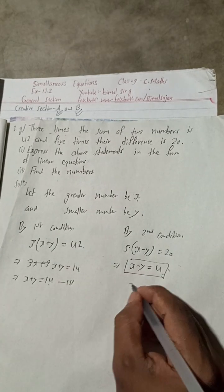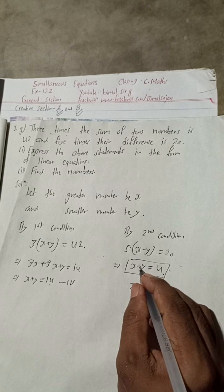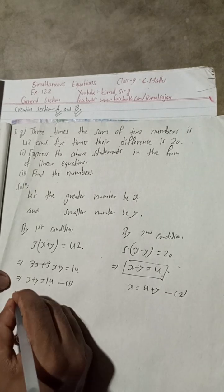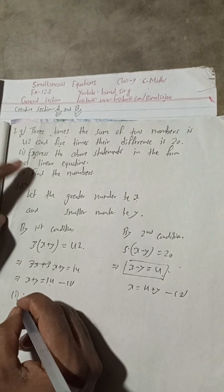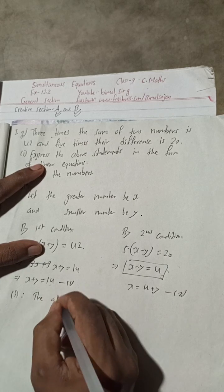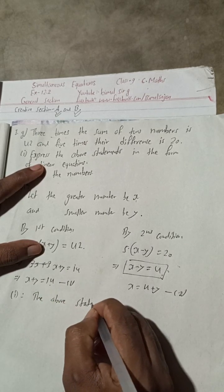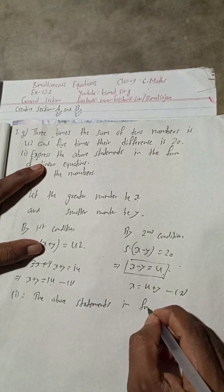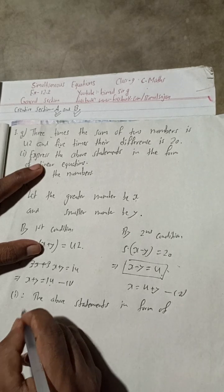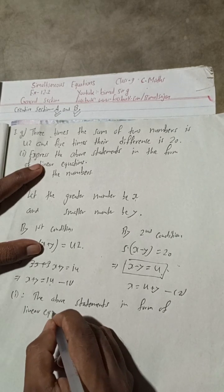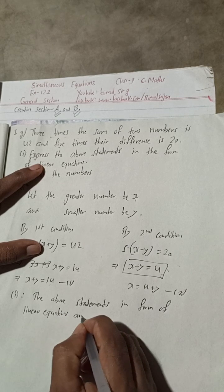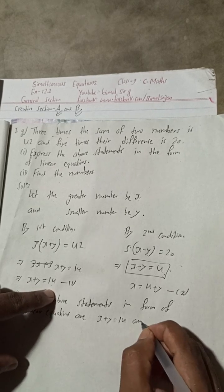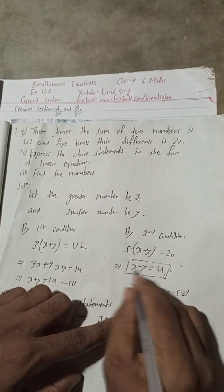Therefore, the above statements in the form of linear equations are: x plus y equals 14, and x minus y equals 4.